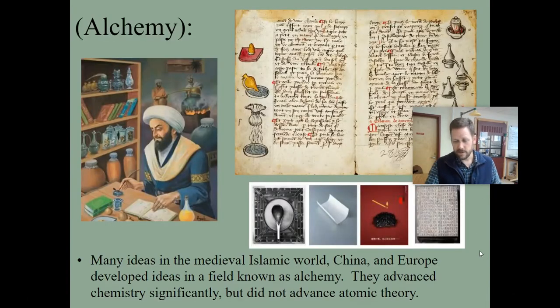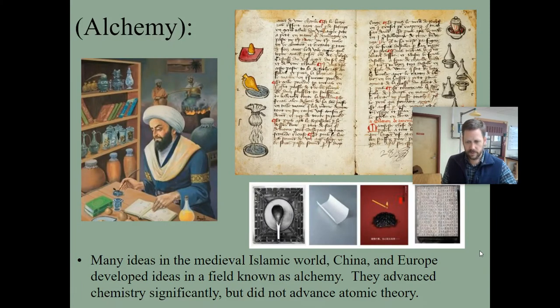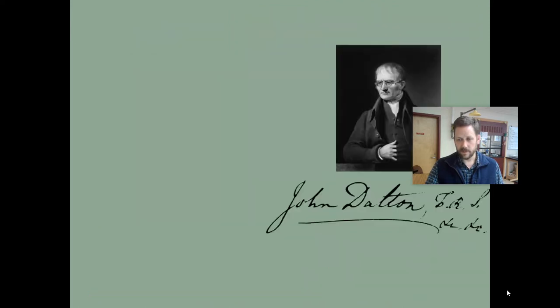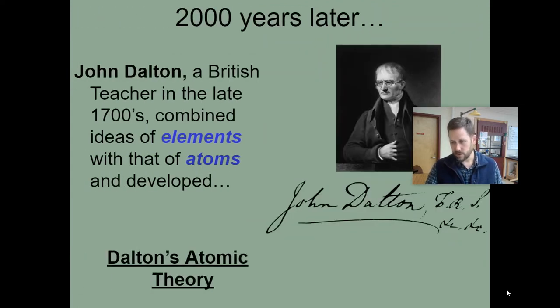And jumping through 2,000 years is a huge jump. I think it's important to talk about the many, many advances that were made in the Islamic world and in China and Europe over those two millennia. But many of those ideas advanced chemistry, but did not necessarily advance atomic theory. So what are celebrated as the four great inventions of China, and of course, the word chemistry comes from the word alchemy, just like algebra comes from al-jabr. So a lot of advances in chemistry made in other areas that weren't really about atomic structure. But since our focus is atomic structure, we're going to jump straight to this British school teacher who around the year 1800 developed the first atomic theory.